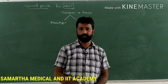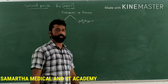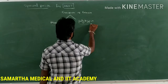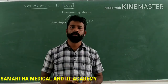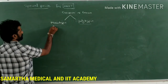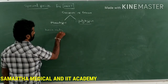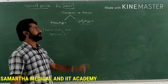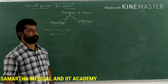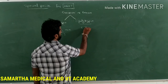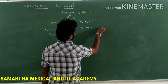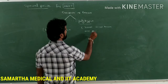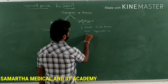In the previous class we were discussing regarding the genus. There are two types of genera: some are monotypic genera and some are polytypic. Monotypic means such genera have only one species of organisms in them. Polytypic means these genera have more than one species in them.